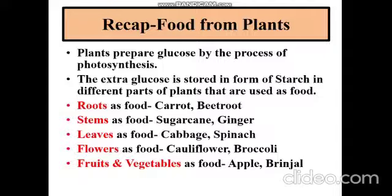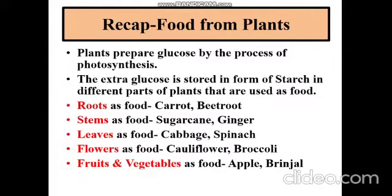So let's recapitulate the topics covered in the last session. In the last session, we learned that plants prepare glucose by the process of photosynthesis. The extra glucose is stored in form of starch in different parts of plants that are used as food. Let's go through the examples of roots as food. They are carrot and beetroot.